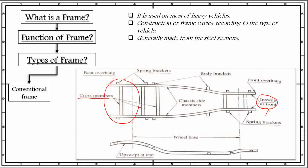The body brackets are provided to support the body of the vehicle, whereas the spring brackets are provided on the frame for mounting the springs. The extension of the chassis frame ahead of the front axle is known as the front overhang, while its extension beyond the rear is known as the rear overhang.